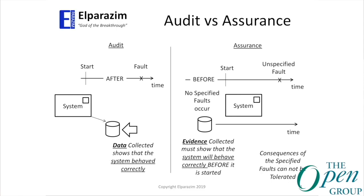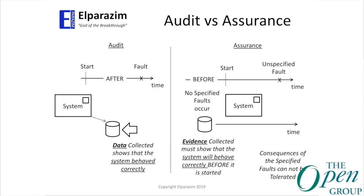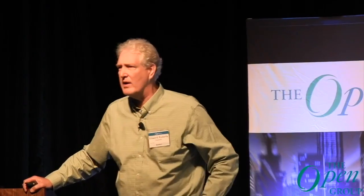To tell you about assurance, you first need to understand what assurance is not — specifically, the difference between auditing and assurance. When you start a system up, you may gather data, and after a fault occurs, you can go back to that data and say whether the system worked correctly or didn't. That's the whole notion of auditing.